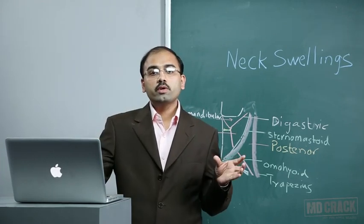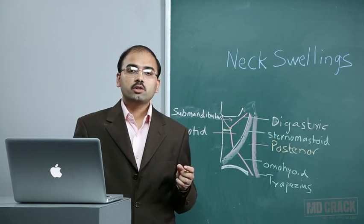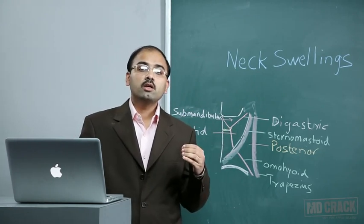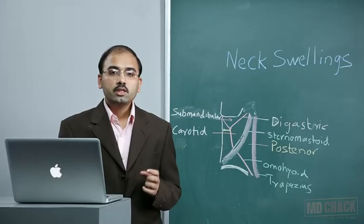Swellings that may contain cholesterol crystals include branchial cyst, dental cyst, dentigerous cyst, cystic hygroma, thyroglossal cyst, and occasionally old hydrocele. This helps differentiate from dermoid swellings, as both have cheesy white contents.